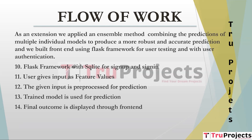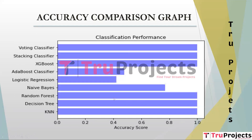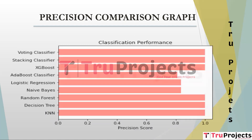The accuracy comparison graph is a horizontal bar graph where the Y-axis represents algorithm names and the X-axis represents accuracy scores. Accuracy measures the overall correctness of a classification model — the ratio of correctly predicted instances (true positives and true negatives) to total instances. The precision comparison graph similarly plots algorithm names against precision scores — the ratio of true positives to total positive predictions (true positives plus false positives).